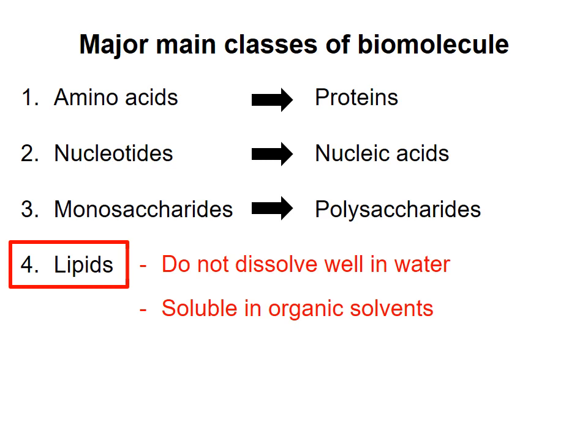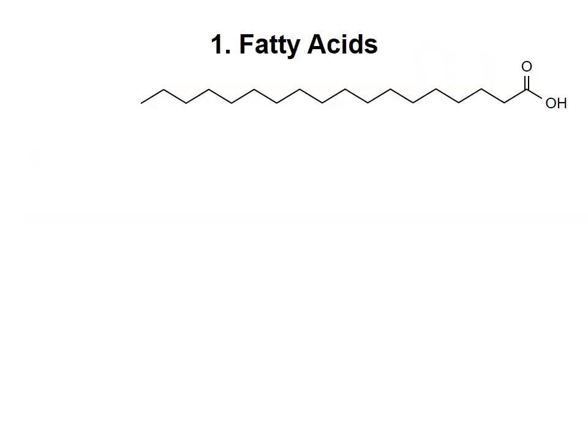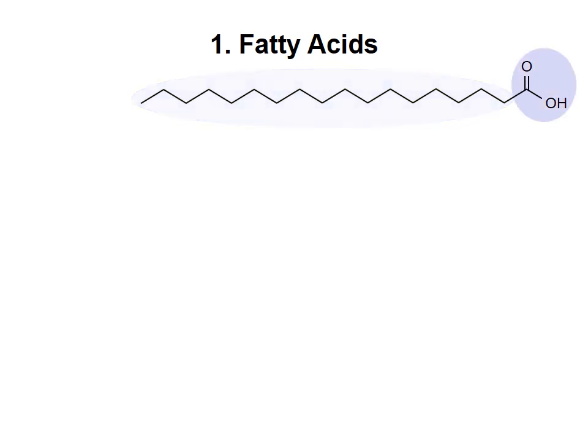If you see the structure of a lipid molecule, you should be able to sort it into one of the six categories mentioned in this video. The first class of lipids I'm going to talk about are fatty acids. Fatty acids have hydrocarbon chains that end in a carboxylic acid group. The hydrocarbon chains are usually linear, not branched, and usually contain an even number of carbon atoms.